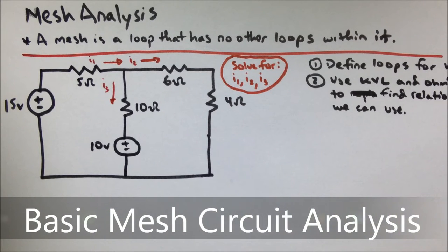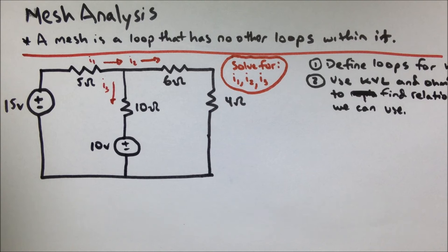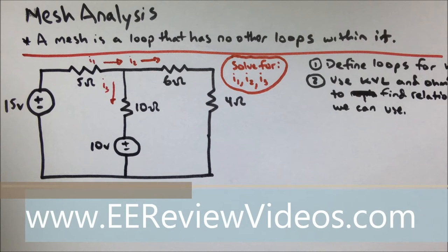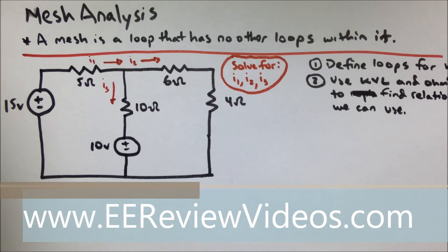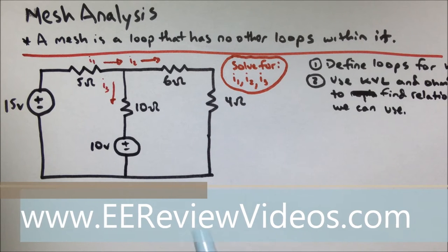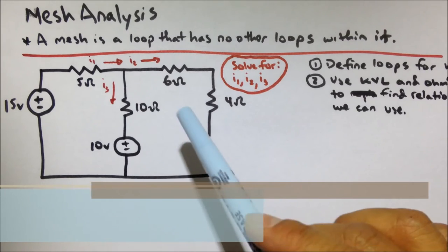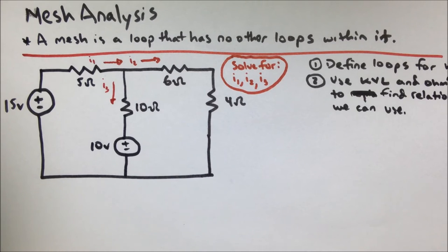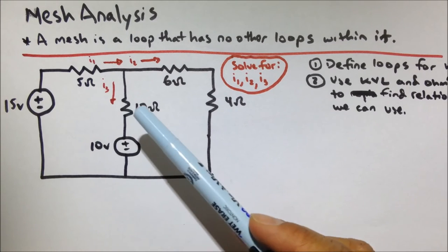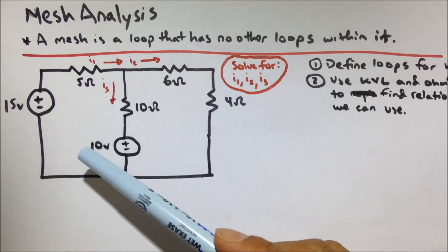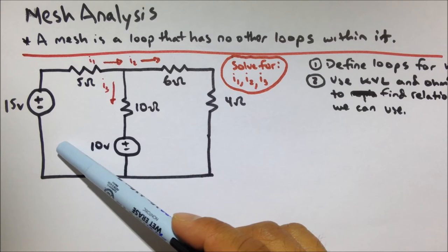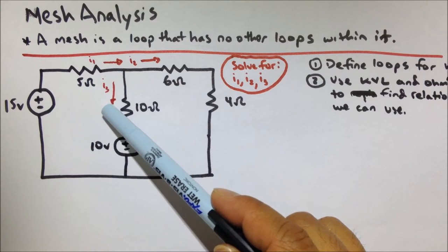Hey y'all. So I thought we'd take a look at a mesh analysis problem. Remember that a mesh is a loop, and it's a loop that has no other loops within it. So when we take a look at the circuit, hopefully you can identify that there are two loops in here that have no other loops within them — so those would be meshes.